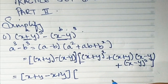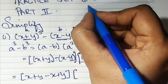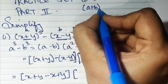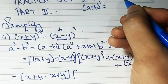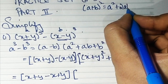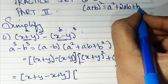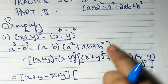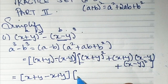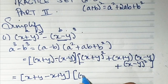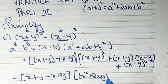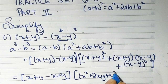Now the second bracket: (x + y) the whole square. Remember the formula a plus b the whole square is a square plus 2ab plus b square. So (x + y) whole square is x square plus 2xy plus y square.